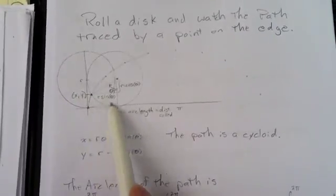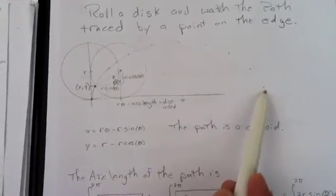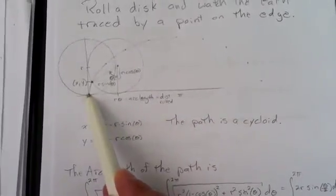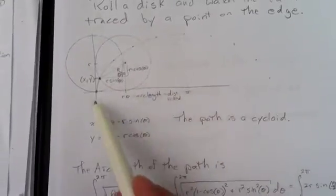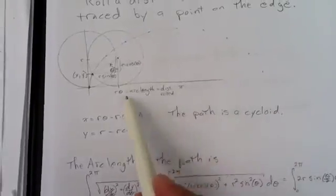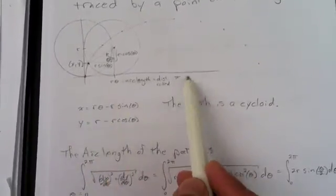As I roll the circle along here, when this point gets back to the bottom again, I'll have done one complete revolution. Which means the bottom here is the circumference of the circle rolled out linearly. So the distance from the bottom point here to the circle returns back to its bottom point is one rotation.